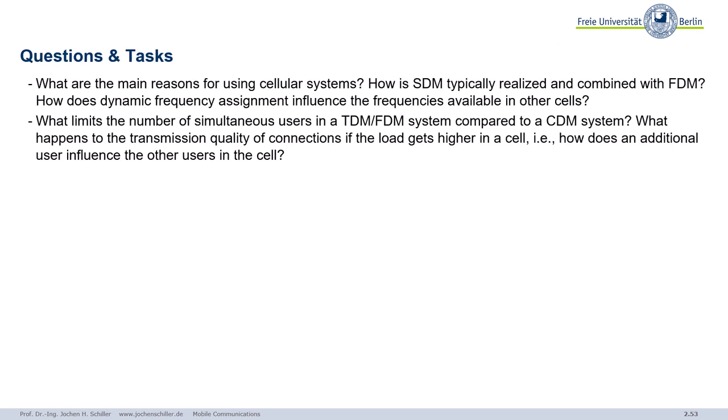Finally, some review questions: Think about cellular systems — why do we use them? How do you realize SDM and how do you combine it with FDM? What happens with dynamic frequency assignment regarding frequencies available in other cells? Compare what limits the number of simultaneous users in a TDM/FDM system versus a CDM system. What happens to transmission quality as load increases? Is there a hard limit or a soft limit when squeezing in more users?